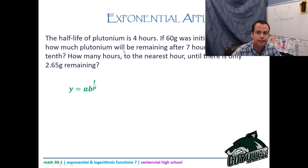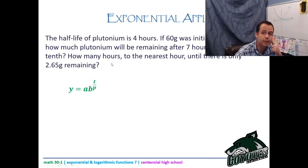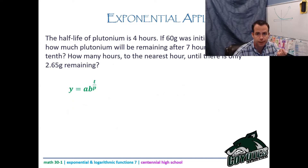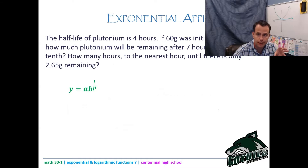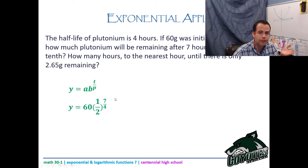For the first part — how much remains after seven hours — a = 60, b = 1/2 (half-life), period p = 4 hours, total time t = 7. Plug it all in and you get 17.8 grams, rounded to the nearest tenth.